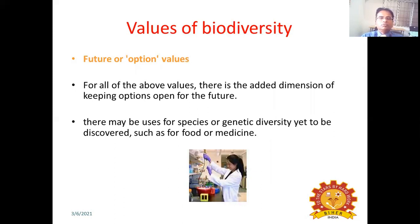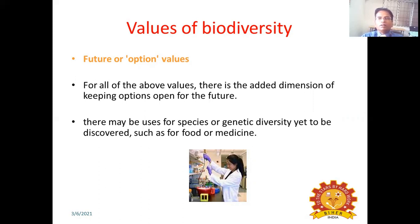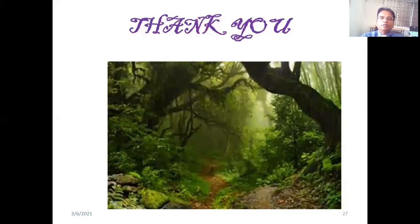The last value is the future or option value. For all the above values, there is the added dimension of keeping options open for the future. We risk losing the benefits of biodiversities if we do not preserve them — because every day new species are identified, and unknown species yet to be catalogued may have very important benefits. If we don't preserve or conserve them, we have no option but to lose them. This is what is called the future or option value. Thank you.